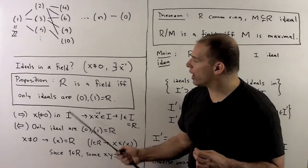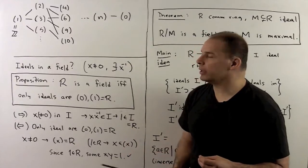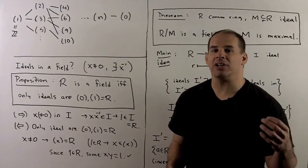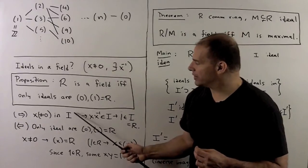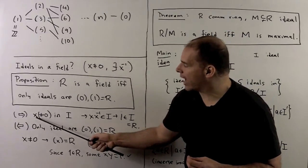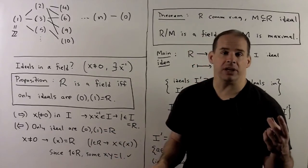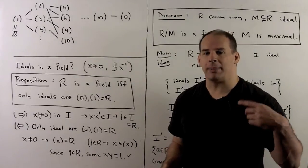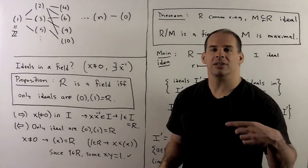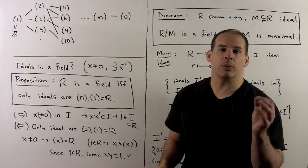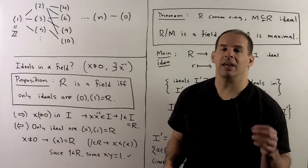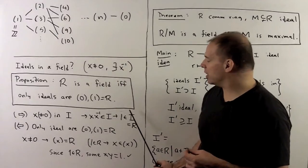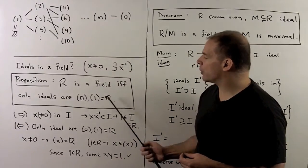To go from left to right, we assume R is a field and we have a non-zero ideal I. We want to show I equals the ring itself. Since I is non-zero, there exists a non-zero X in I. We're in a field, so X is a unit. Because X is in the ideal, multiplying by any ring element stays in the ideal. So we multiply by X-inverse: X-inverse times X equals 1, which is in the ideal. That means our ideal equals the ring itself, which is what we wanted.